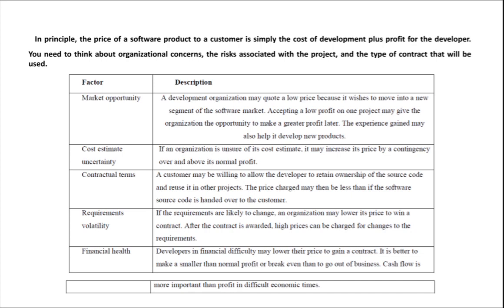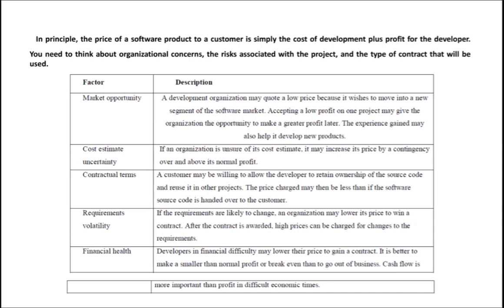While fixing the price of software, some other factors will also influence it. For example, you have to consider the risks associated with the project, and also the type of contract your company has made with the customer. Those contracts will play a huge role in fixing the price. Some other factors will also affect the pricing of a particular software.